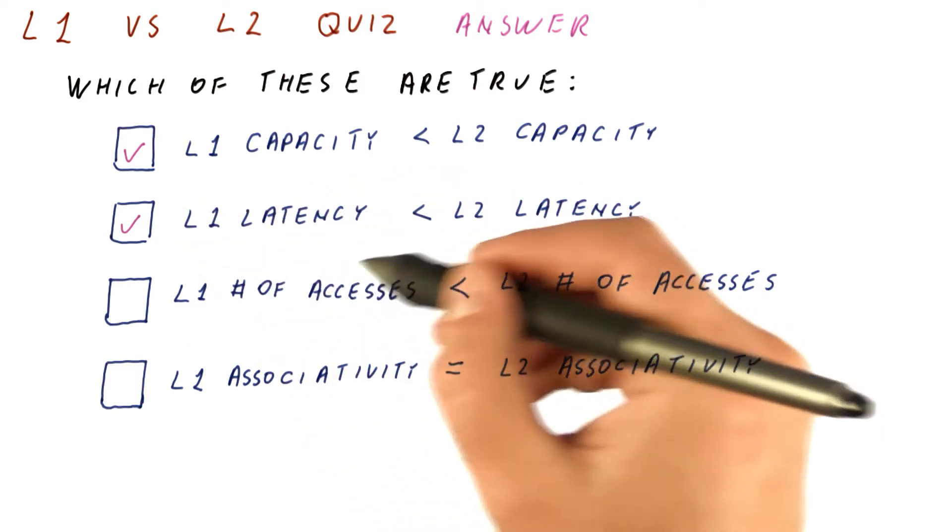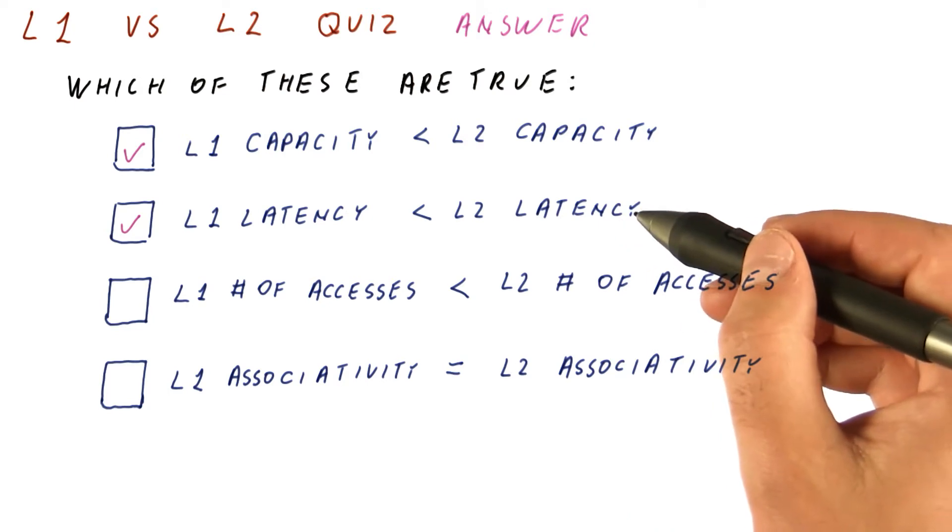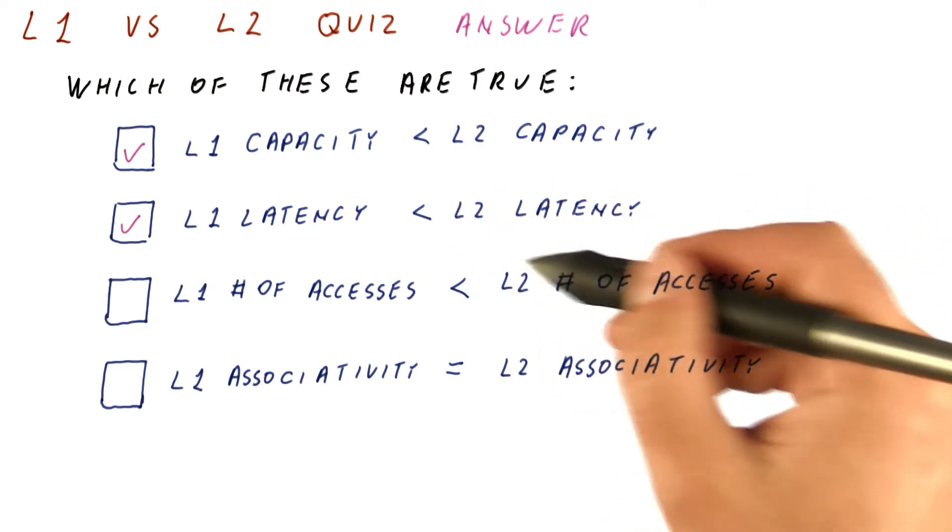We look first in L1 cache, not because it has a better chance of finding the data than the L2 cache, but because it has a lower hit latency.